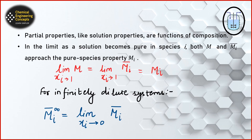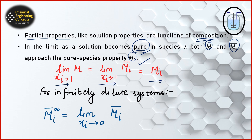We saw the basics of partial molar properties, which like other solution properties are a function of composition — they are composition dependent. If we take the solution to be pure for any species i, then the total molar property and the partial molar property both move towards the pure species property. If we look at the pure species, both will become the pure species properties.